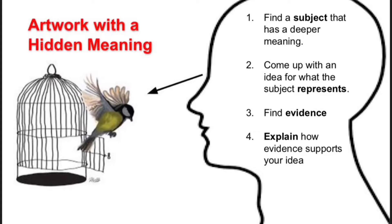For example, the bird could symbolize freedom. Once you have a theory about what the deeper meaning in the artwork is, then you have to back up your theory with evidence. So look back into the artwork and find other things in it that could support your idea.